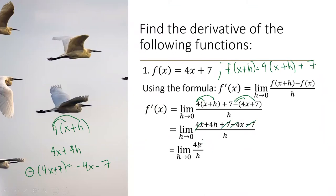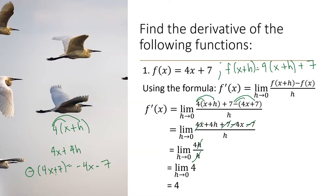So we have 4h over h. H is the common factor here, so we're going to perform the cancellation. Ang matitira is 4. Based on this limit, we're going to use the constant law. Since 4 is a constant function, ang ikakalabas niya ay 4 pa rin. Therefore, 4 is the derivative of this function.